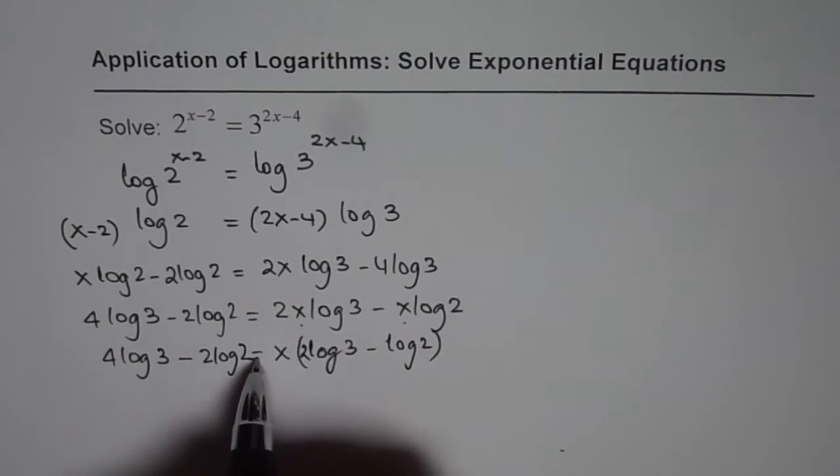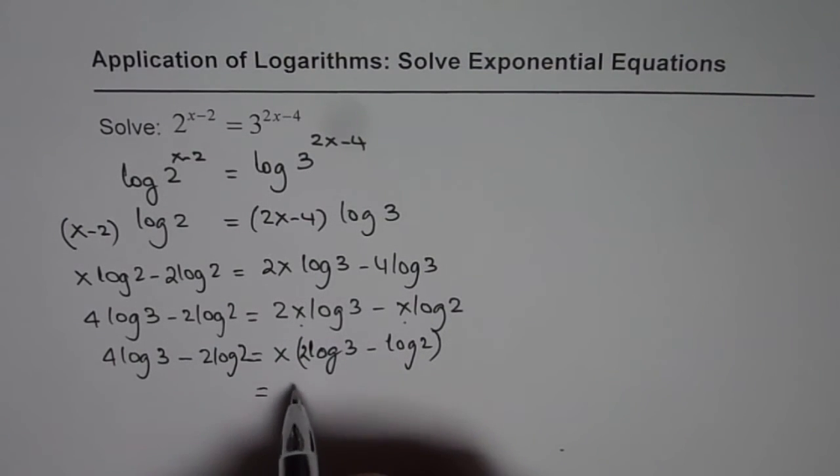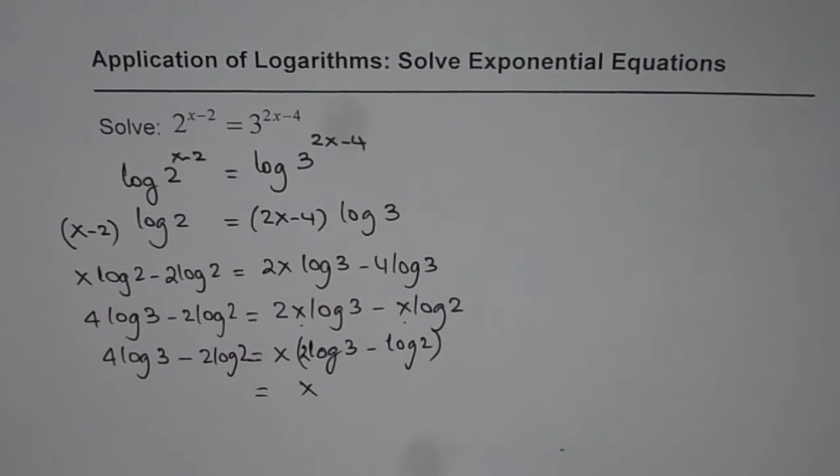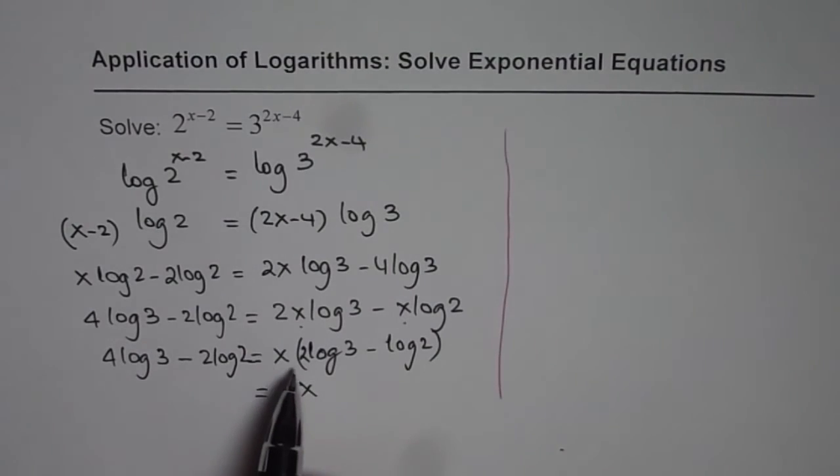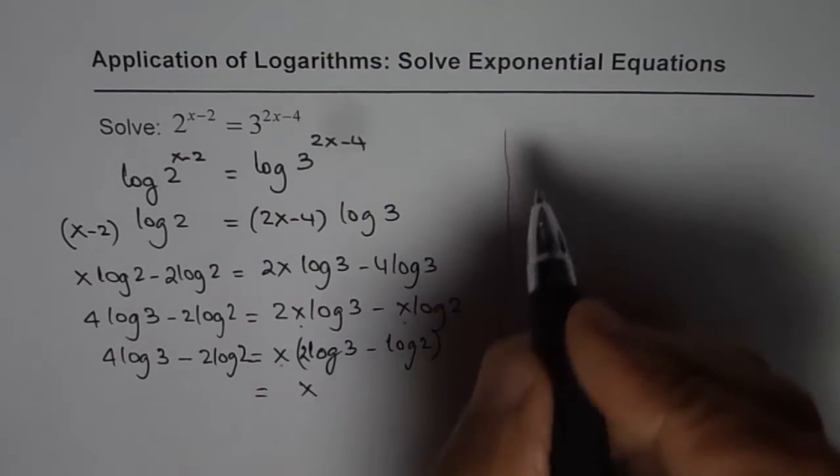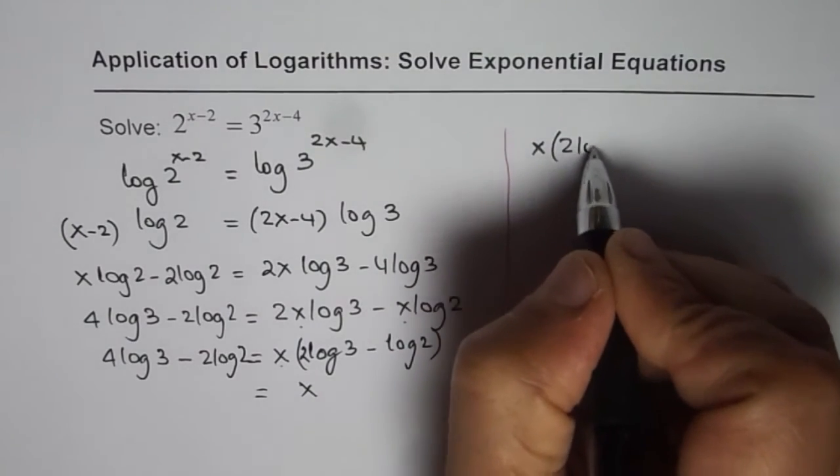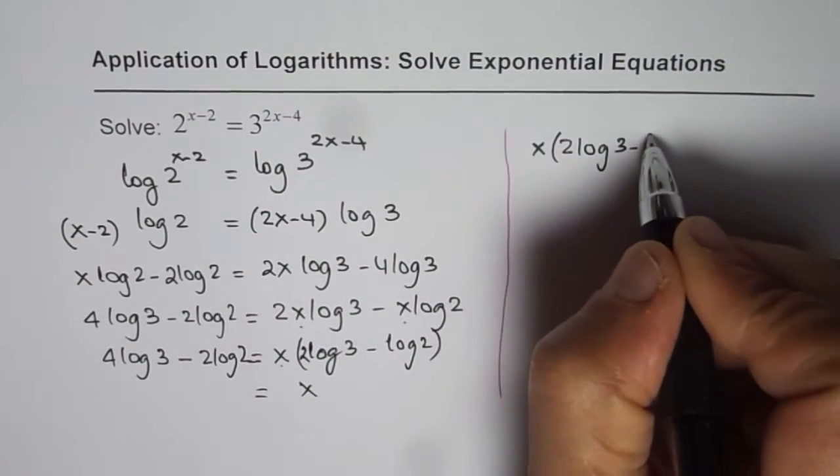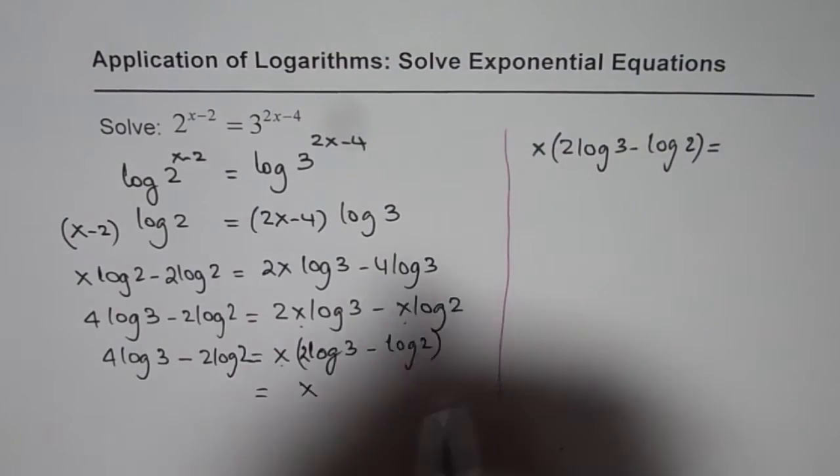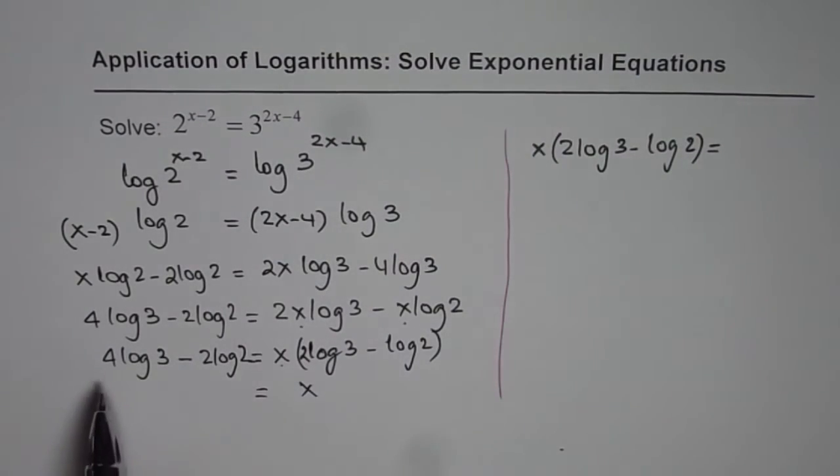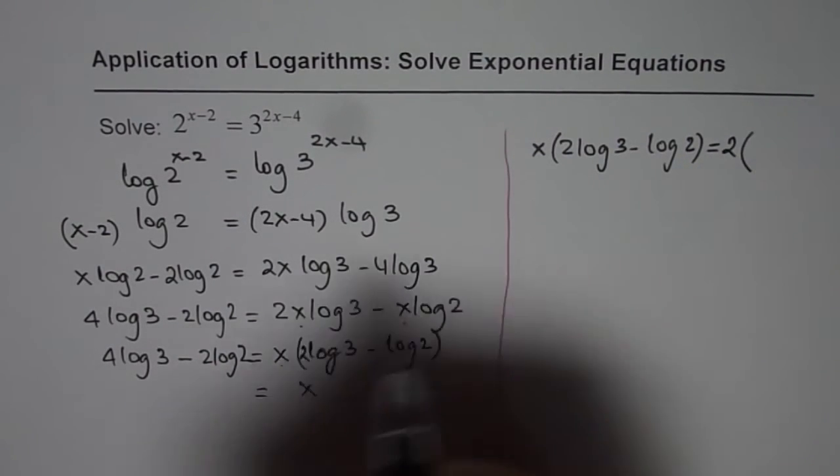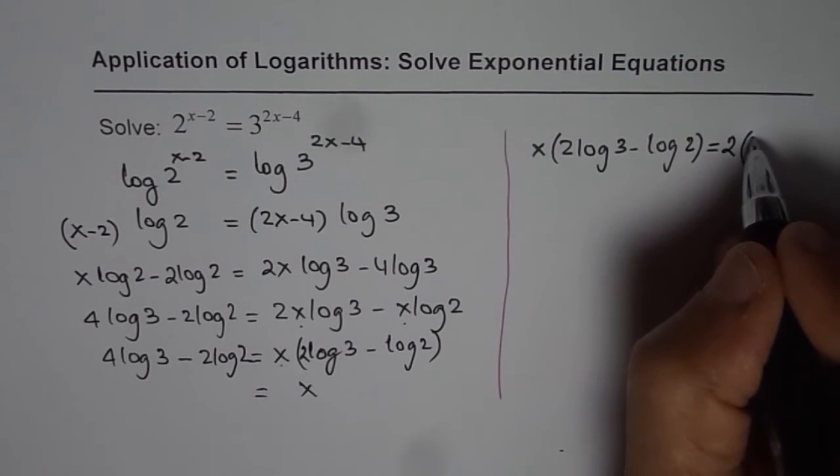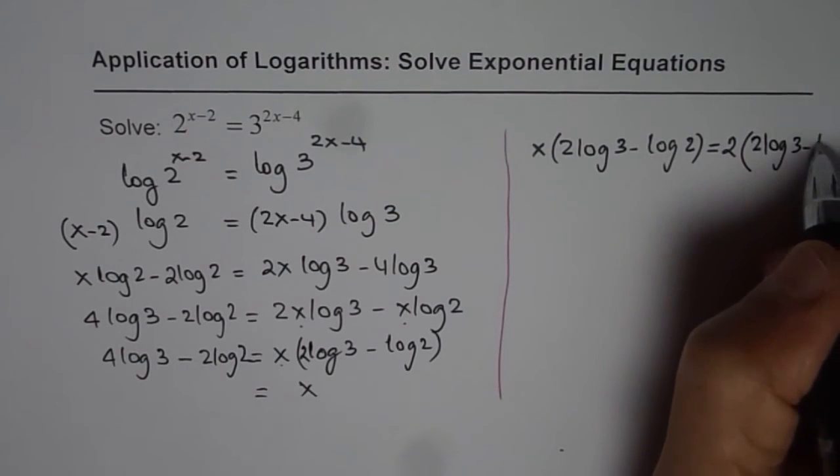Now equals to x. So we can say what is x equals to. Let us solve on the right side. So the equation for us is, let me rewrite this equation: x times 2 log 3 minus log 2 equals this part on the right side. You will notice it is 4 log 3 minus 2 log 2. I can take 2 as a common factor. So I get 2 times 2 log 3 minus log 2.